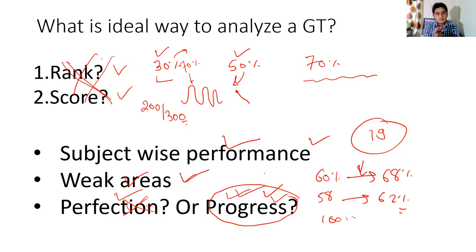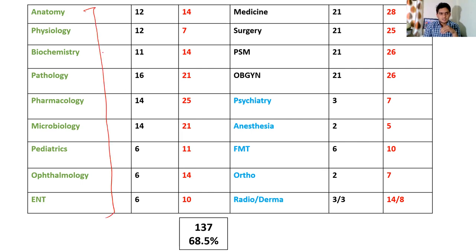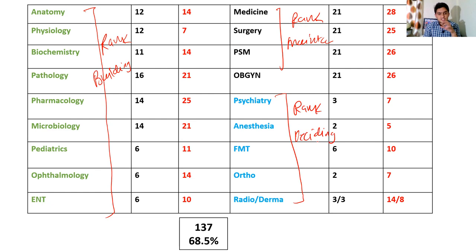These three things - subject-wise performance, identifying weak areas, and tracking progress - are the important things to assess in a grand test. Now, what should our targets be and what is the ideal way to approach GTs? From my NEET PG analysis slide, I had done a NEET PG 2021 question recall analysis from different classes and review books. The first and second prof subjects are our rank-building subjects, then we have rank-maintaining subjects, and rank-deciding subjects.